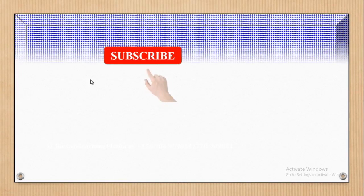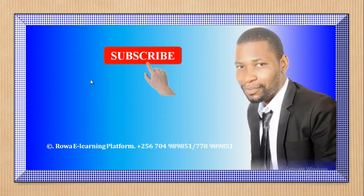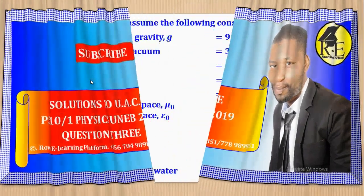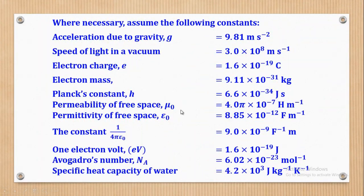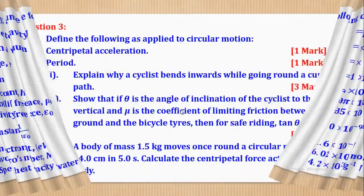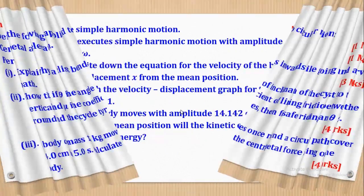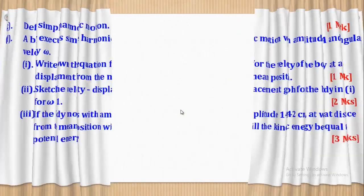Hello viewers, this is Wagner Ronald taking you through today's tutorial on A-Level Physics. In this tutorial we are going to talk about the solutions to A-Level Physics for UNEP 2019, Paper 1, and particularly Question 3. These are the constants you can use while answering this question. I believe by now you have already tried out this question from the previous video and you are ready to assess yourself and check your progress, so let's get started.